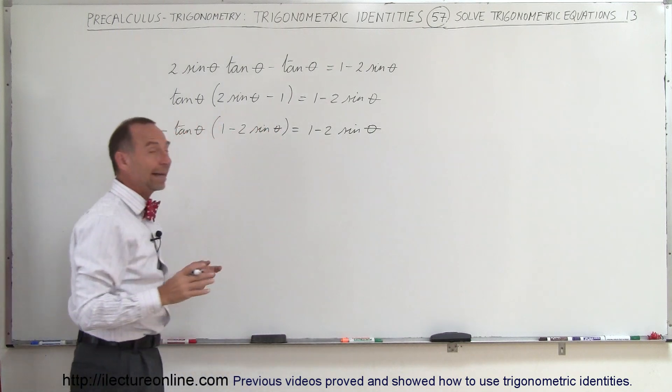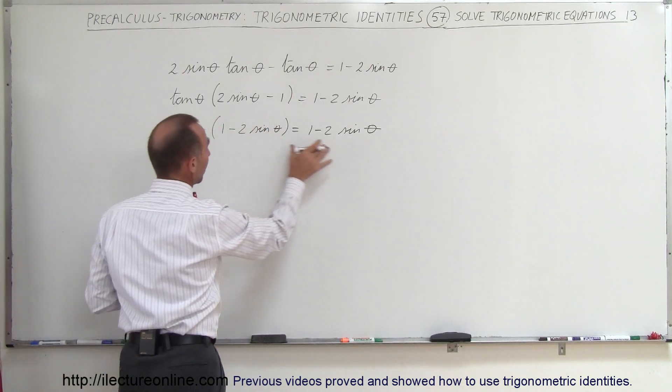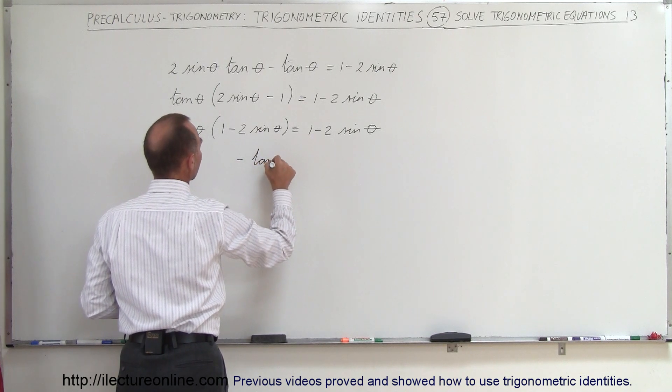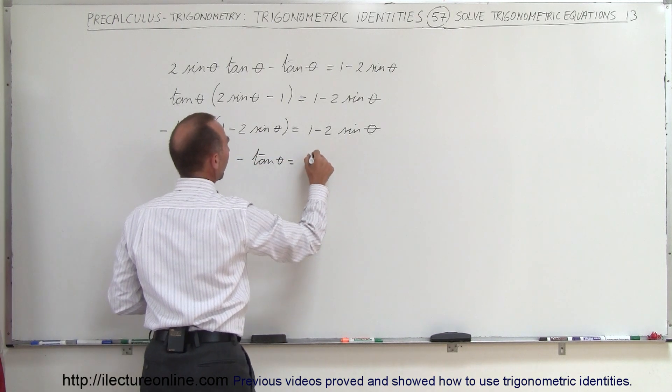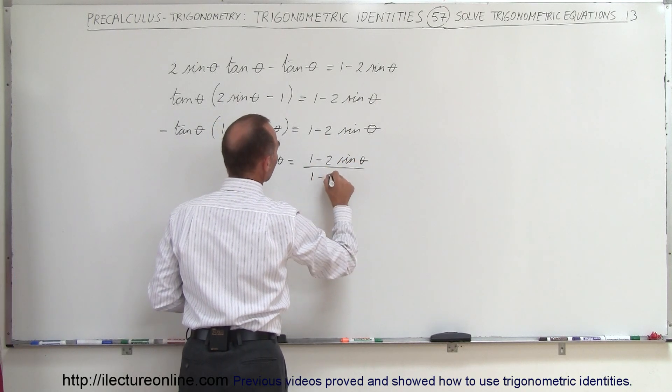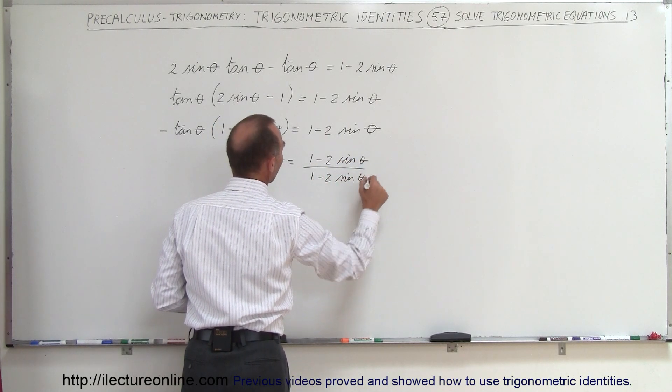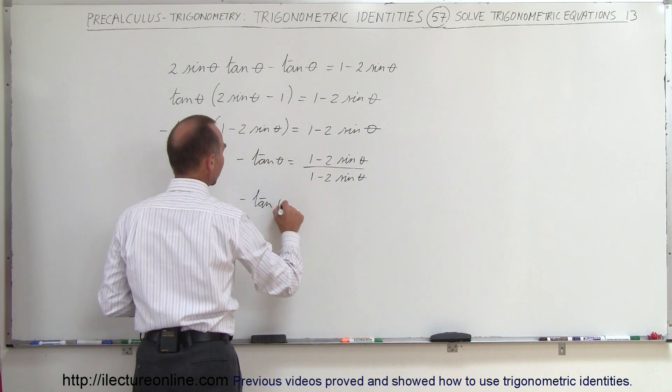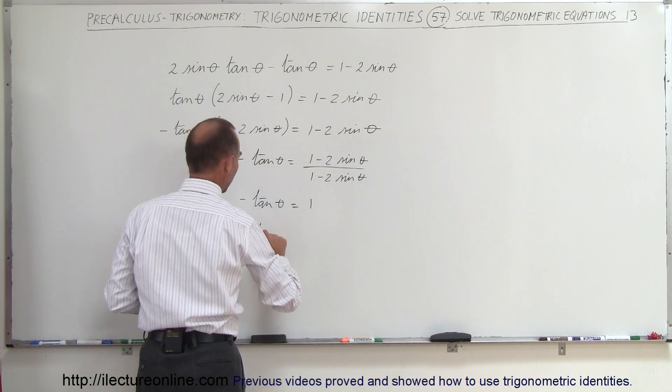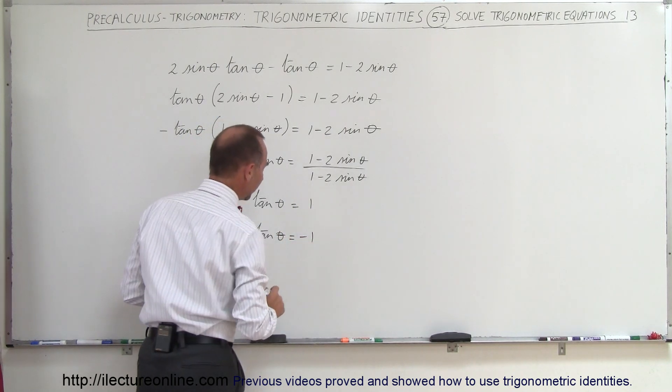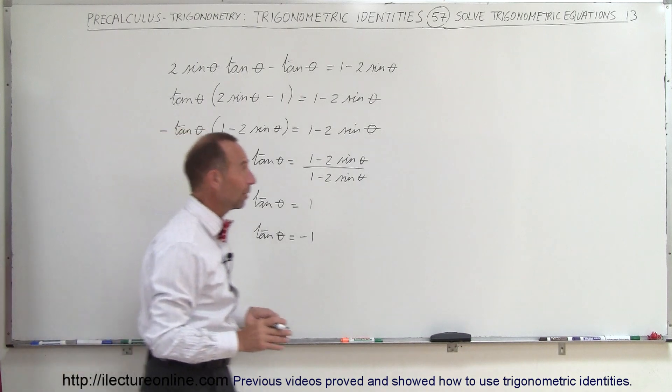So now I can go ahead and divide both sides by 1 minus 2 times the sine of theta. So minus the tangent of theta equals 1 minus 2 sine theta divided by 1 minus 2 sine theta. Of course that's equal to 1, so minus tangent of theta equals 1, or tangent of theta equals minus 1. Okay, now we have our answer very close here.